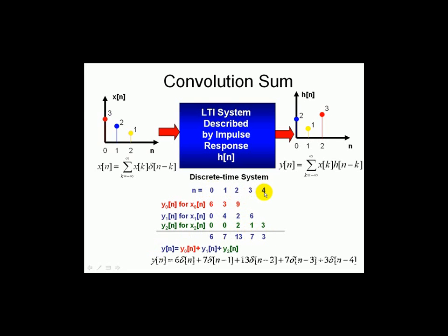Adding up all those inputs, we get an equivalent mathematical description of 6 delta n at n, 7 delta at n minus 1, 13 at delta n minus 2, 7 with an impulse located at n minus 3, and a weight of 3 located for this impulse at n equal 4. That's the mathematical description.